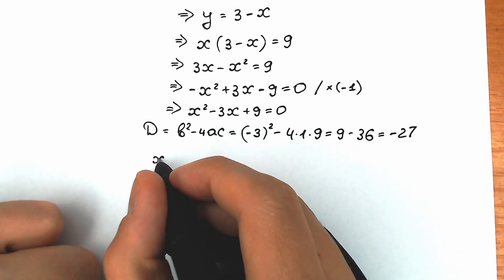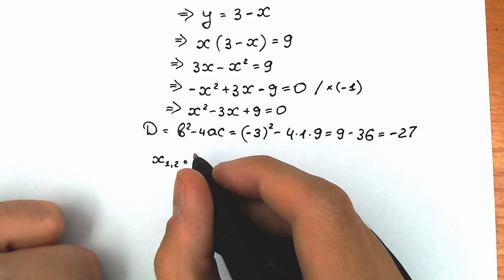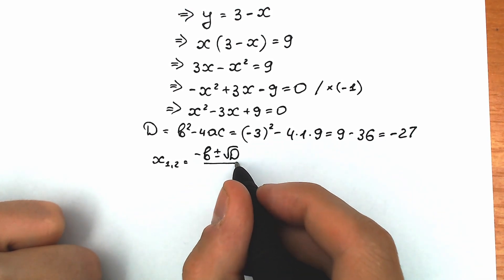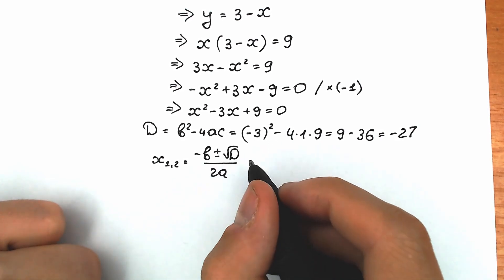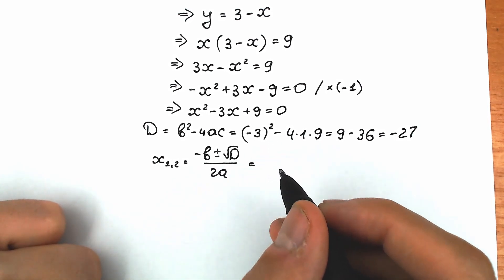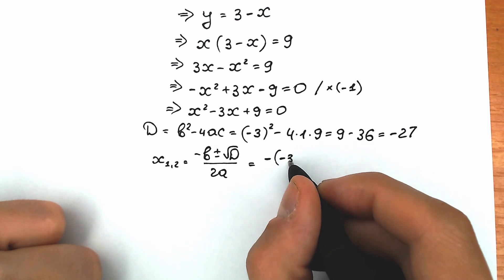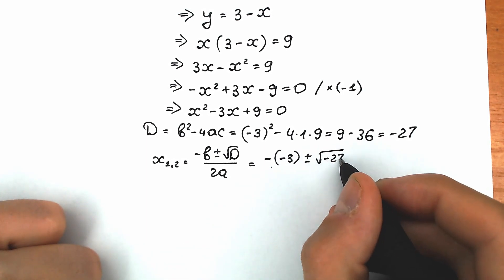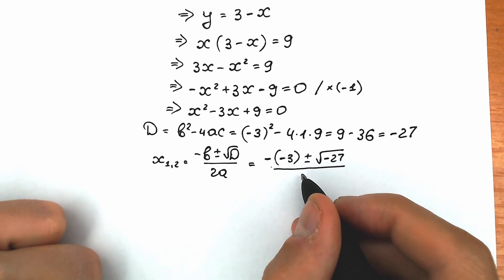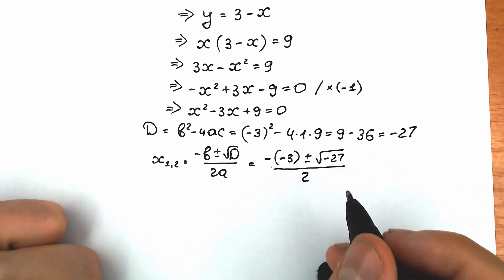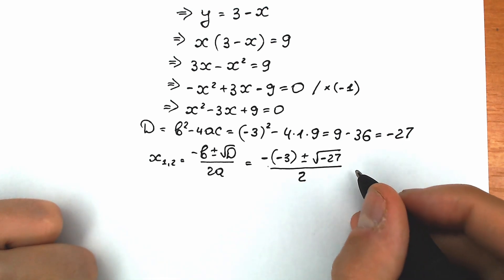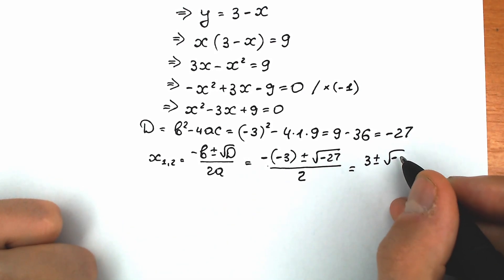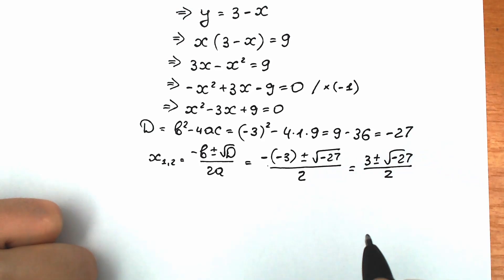From school we need to know the classic formula: x₁,₂ equals minus b plus or minus the square root of the discriminant, all over 2a. Let's plug in each element. We have minus b which is minus (minus 3), plus or minus the square root of the discriminant — square root of minus 27 — and we divide all by 2a. Since a equals 1, we get 2. Simplifying, minus minus gives us plus: 3 plus or minus square root of minus 27, all over 2.